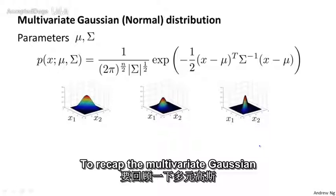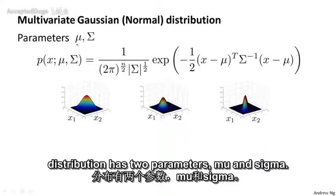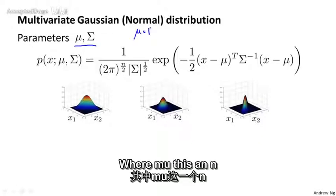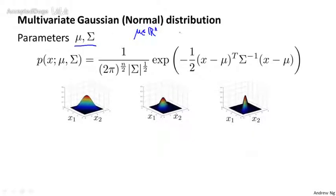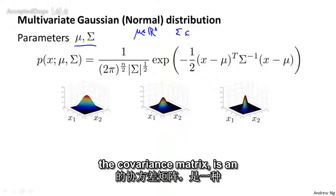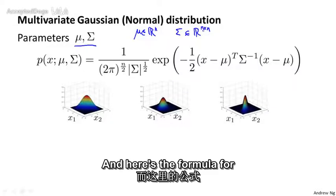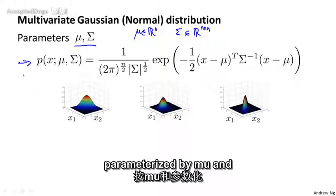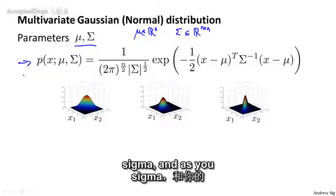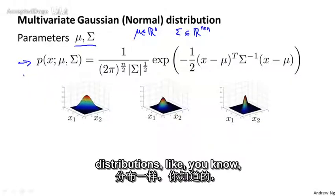To recap, the multivariate Gaussian distribution, or the multivariate normal distribution, has two parameters, mu and sigma, where mu is an n-dimensional vector, and sigma, the covariance matrix, is an n by n matrix. Here's the formula for the probability of x, as parameterized by mu and sigma. And as you vary mu and sigma, you can get a range of different distributions — these are three examples of the ones we saw in the previous video.